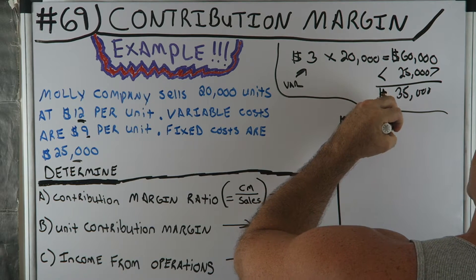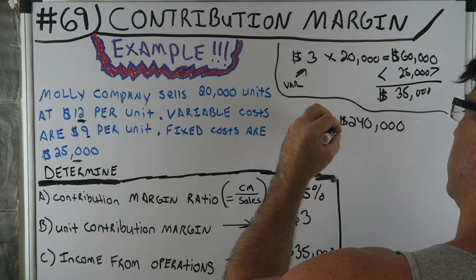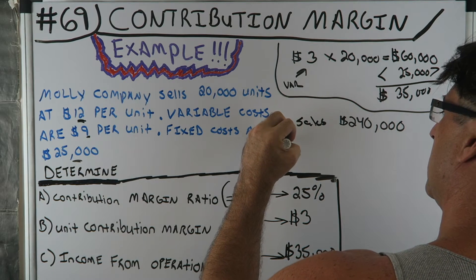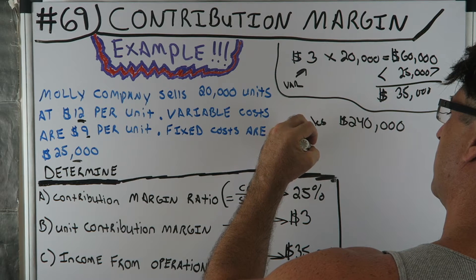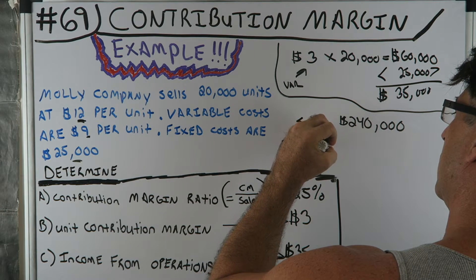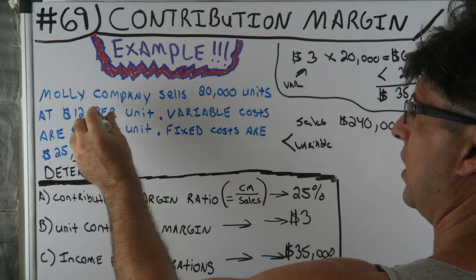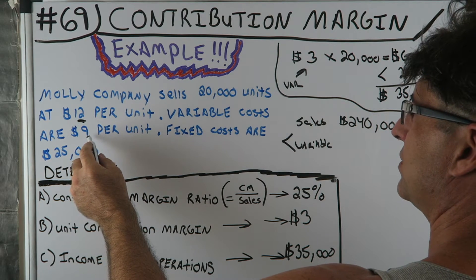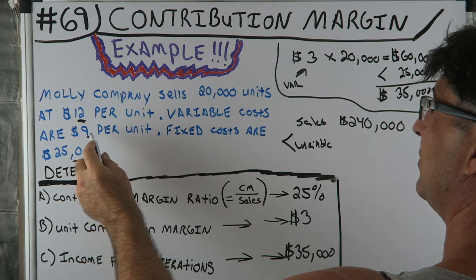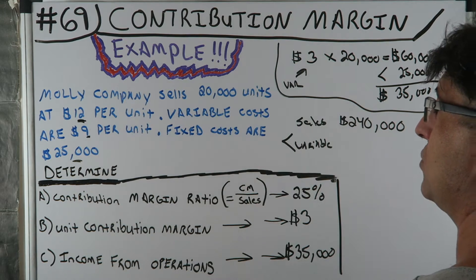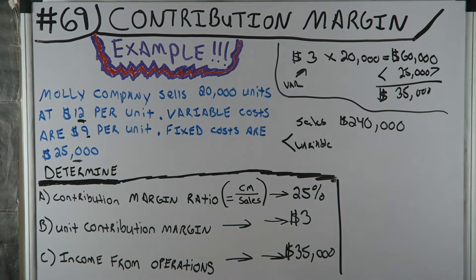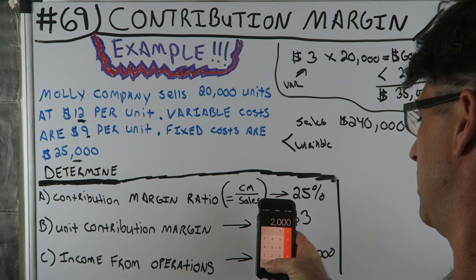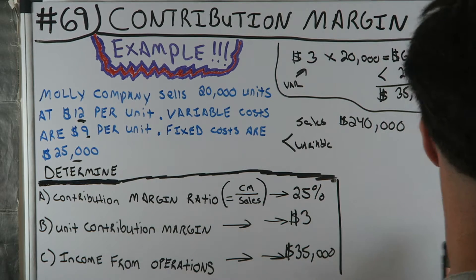$12 times 20,000 equals $240,000 — that's the sales. Then minus variable costs: variable cost is $9, so $9 times 20,000 equals $180,000.